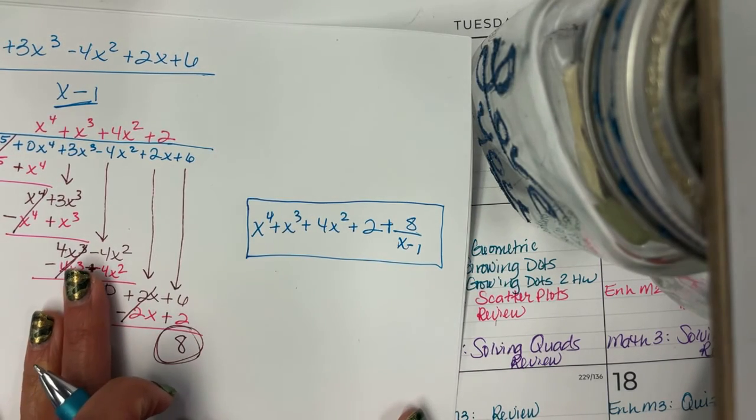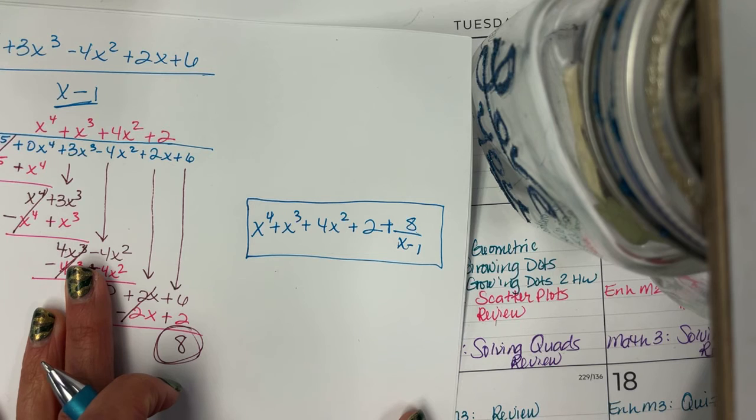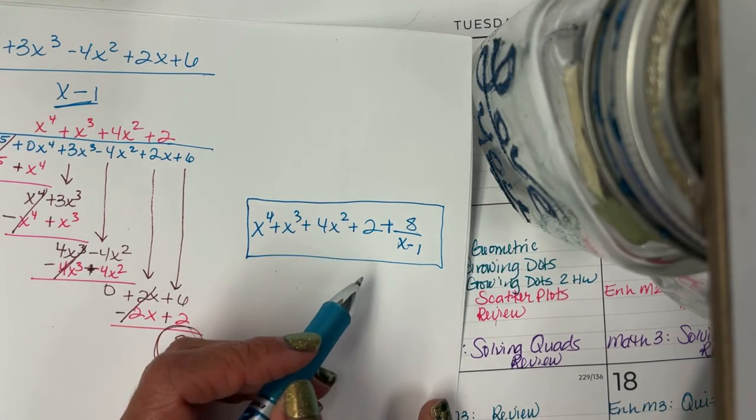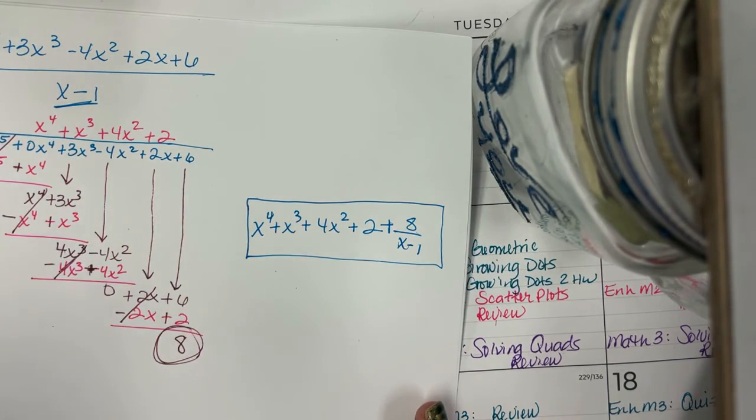Now, synthetic division is shorter and it's quicker. So to students, that means it's easier if it's shorter. Sometimes it is, sometimes it isn't. But synthetic division is the one we're going to be using more often from here on out. But this works too. So whatever you guys prefer. There you go.